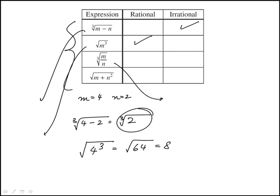And then that is cube root of m over n, so that's going to be again cube root of 2, that's irrational.